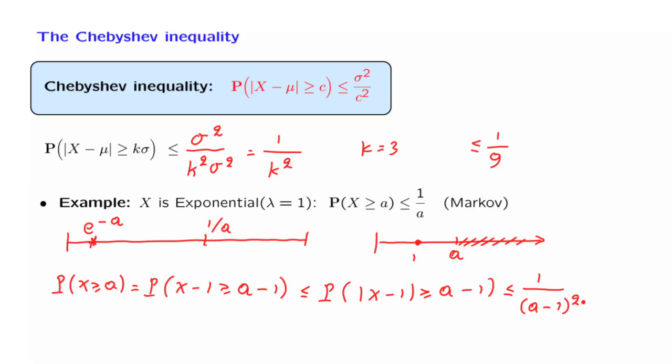Notice that if a is a large number, this quantity here behaves like 1 over a squared, which falls off much faster than 1 over a. So at least for large a's, the Chebyshev bound is going to give us a smaller bound and therefore more informative than what we obtained from the Markov inequality.